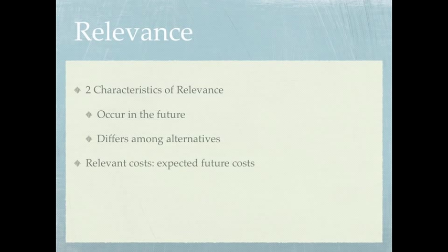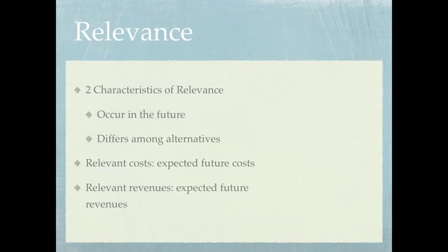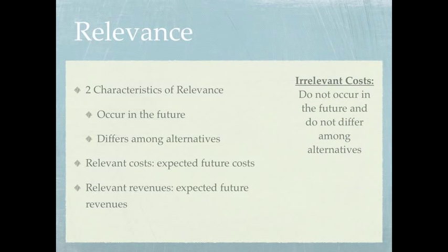So relevant costs are expected future costs, and relevant revenues are expected future revenues, and both of these things would also change and occur in the future. Two characteristics make something relevant. On the flip side of that, we can talk about irrelevant costs, which of course do not occur in the future and will not differ among alternatives.